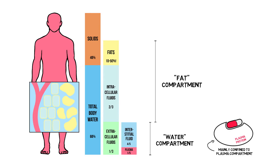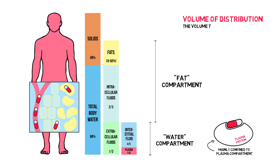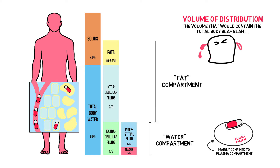The unbound or free drug concentration in the systemic circulation typically determines drug concentration at the active site and thus efficacy. The extent to which a drug is confined to the plasma compartment is quantified by its volume of distribution, the definition of which is the volume that would contain the total body content of the drug at a concentration equal to that in plasma.